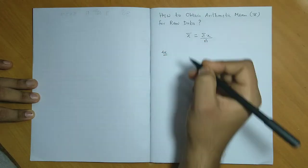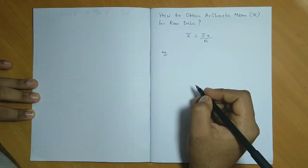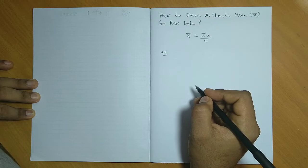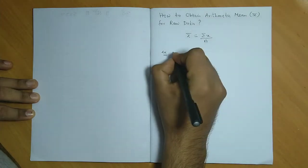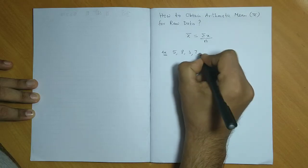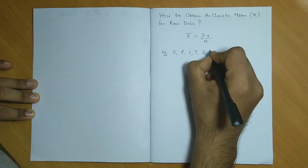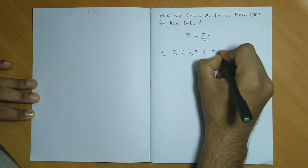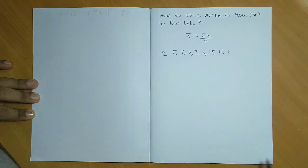Now let us take an example regarding this. Suppose we need to find the mean for these values: 5, 8, 3, 7, 8, 15, 12 and 4.